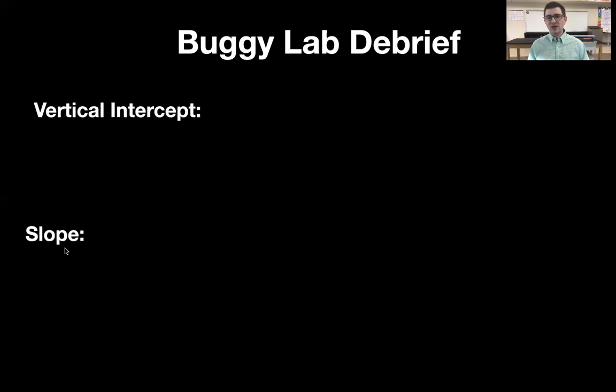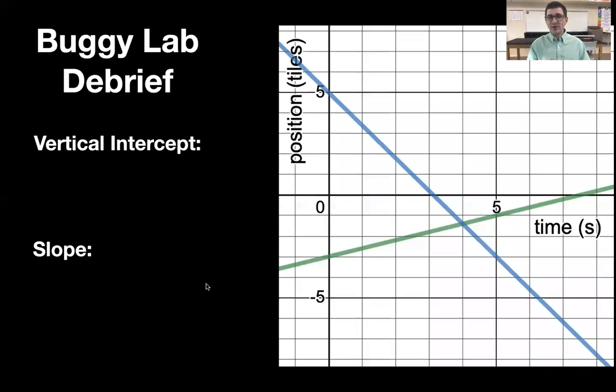But to start helping you think about that even further, I noticed when I was going around the different groups had different results. And that doesn't mean that one group did it right or one group did it wrong, but I want to start thinking about what is causing those differences? Where are those differences coming from? So I only had time to grab two groups results, but here we have the blue team and the green team.